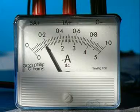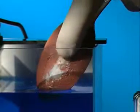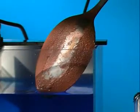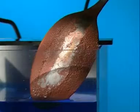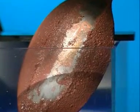Increase the current and see what happens. A thicker layer of copper forms, but the plating is poor. It rubs off easily. The size of the current used during electroplating is crucial.